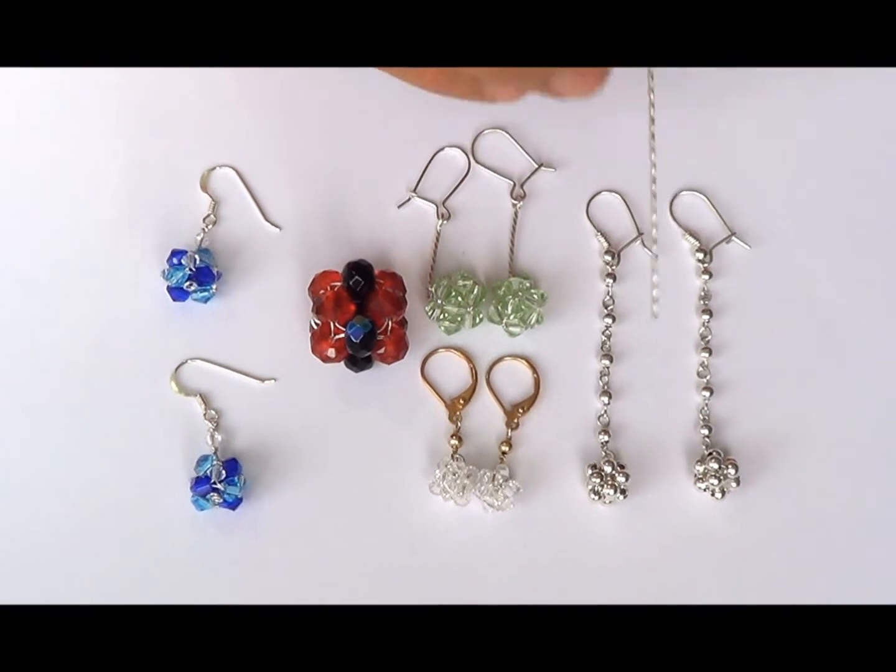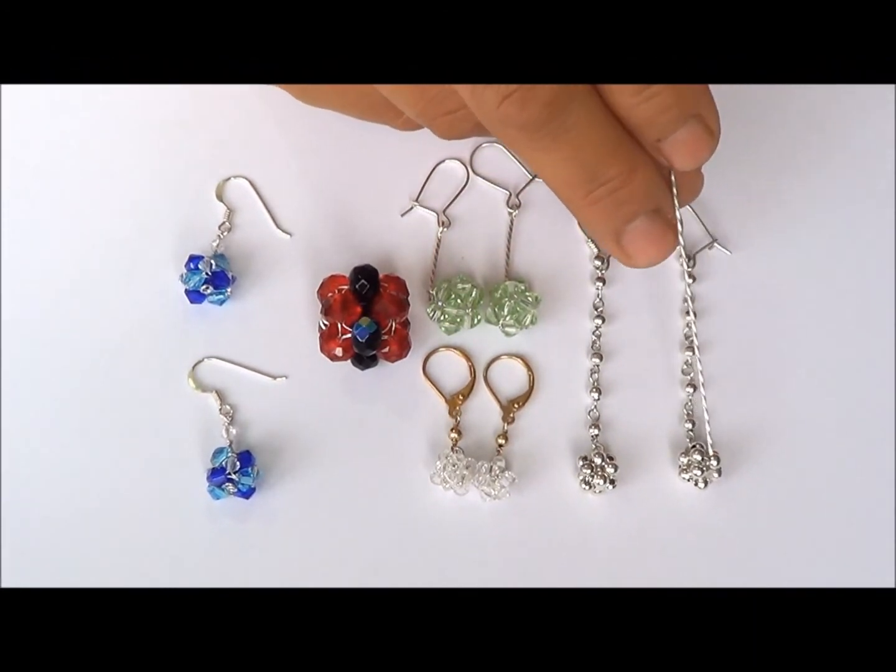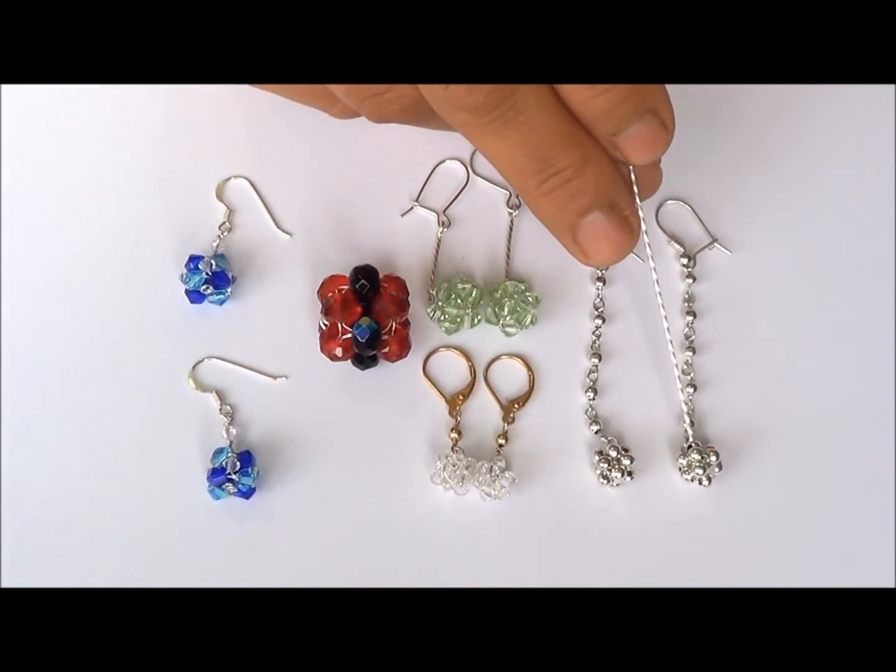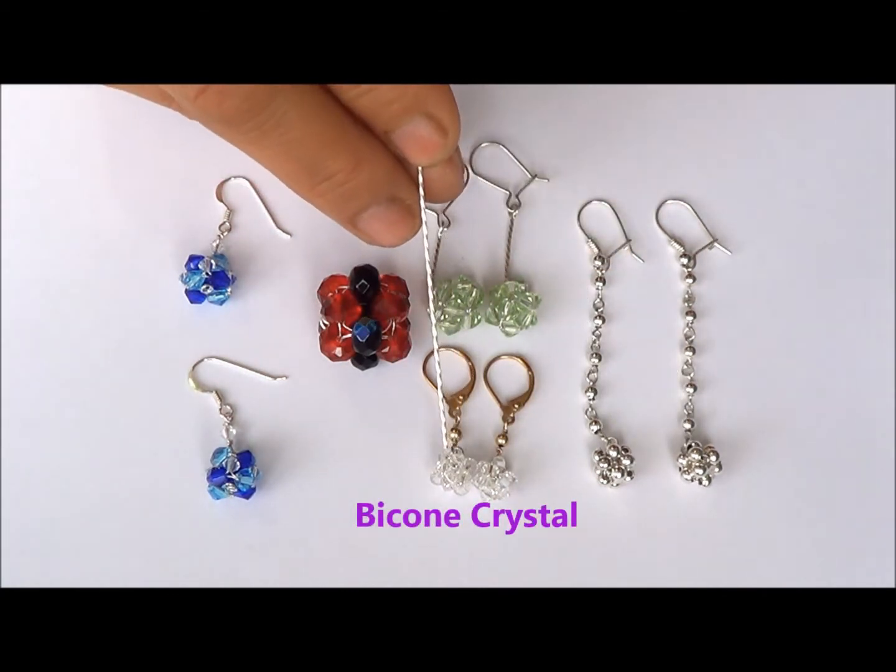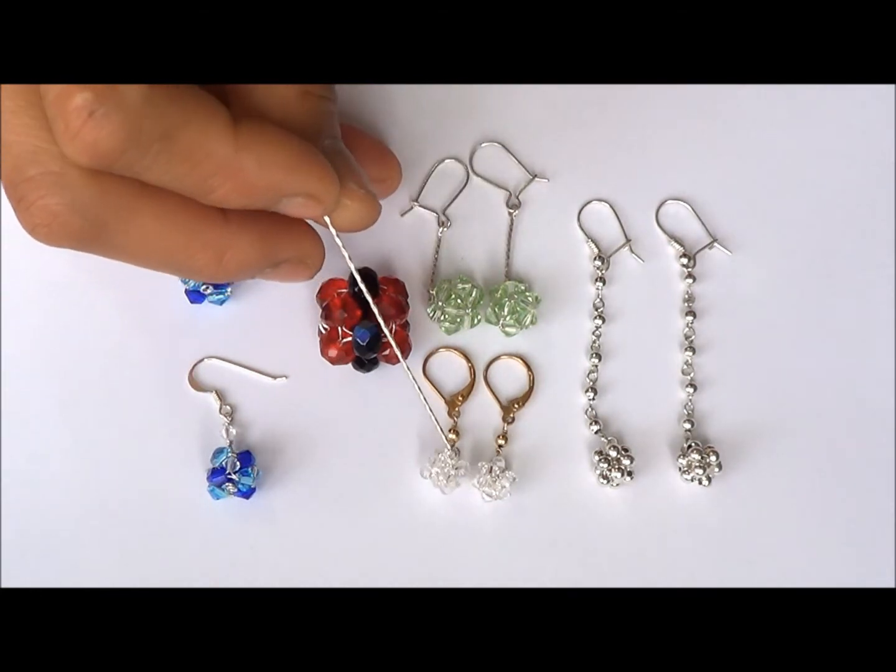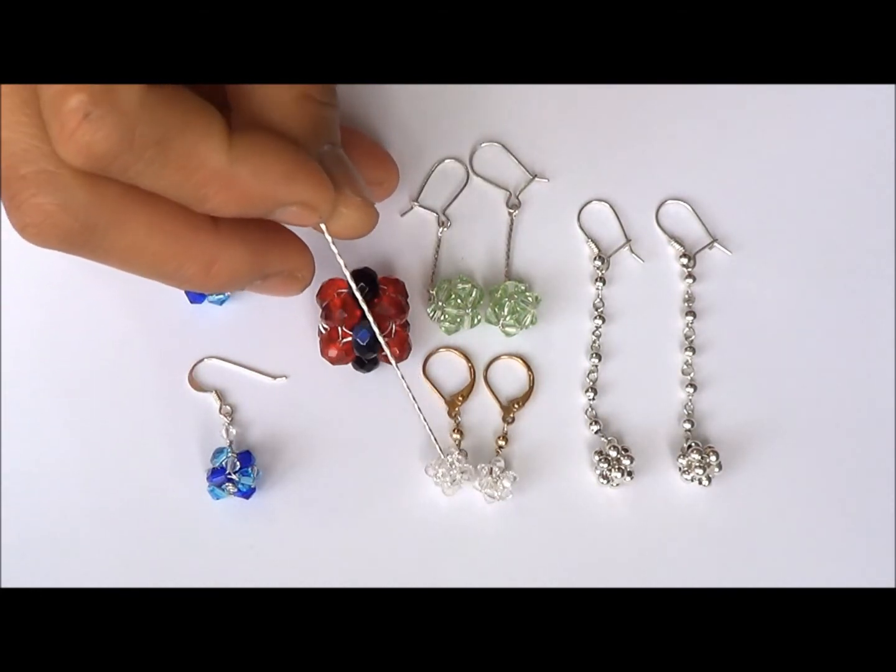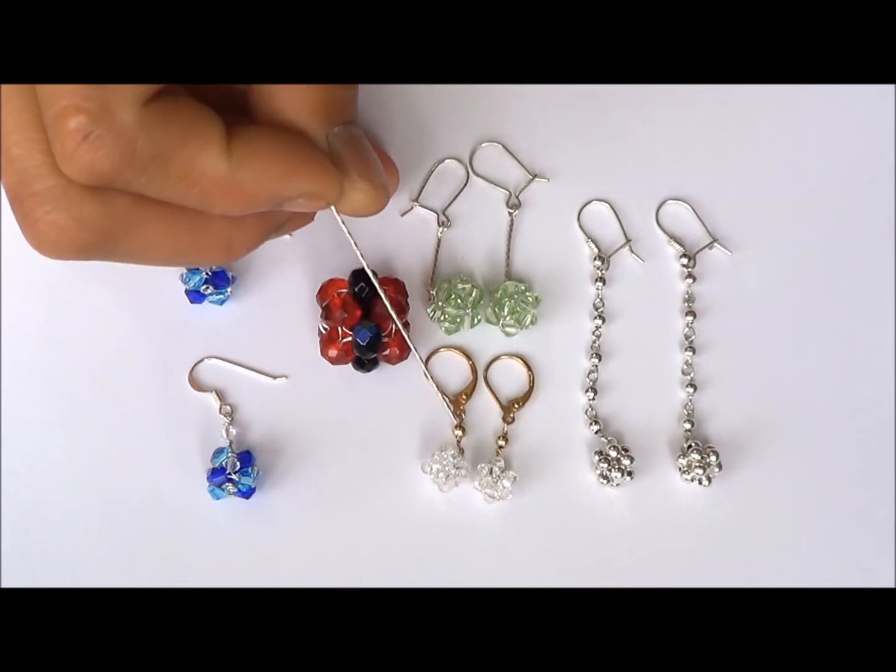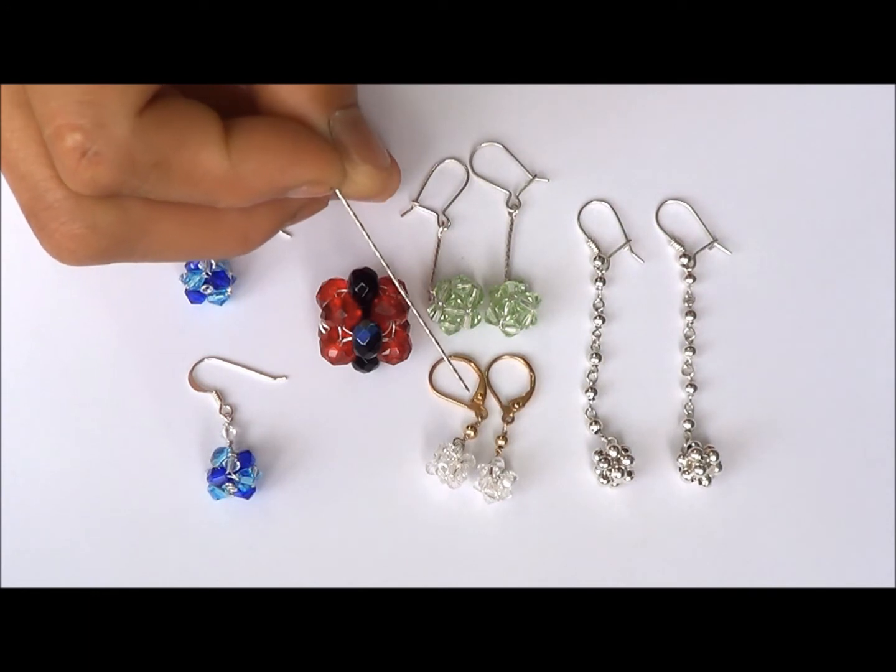The ones I'm going to be showing you today is a silver one like this one here. I've used a three millimeter sterling silver bead for this one, and this one is also three millimeter. I've used silver wire for the inside to make the right angle weave ball, and gold filled wire for my other findings and ear hooks.